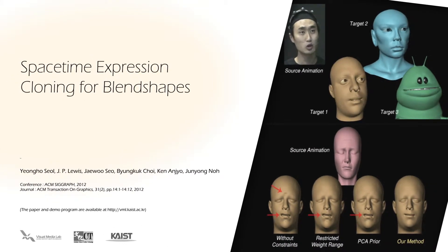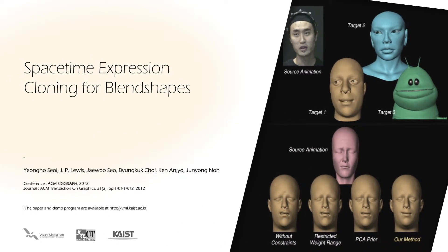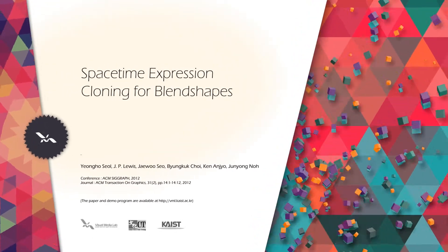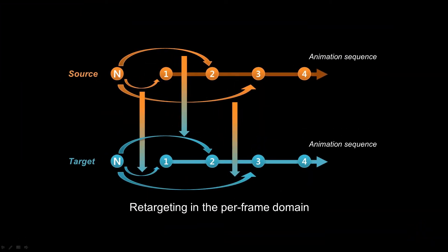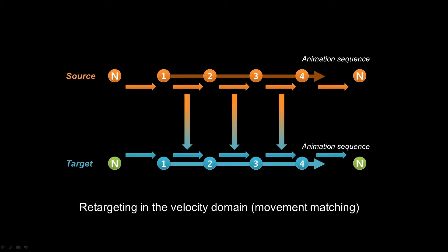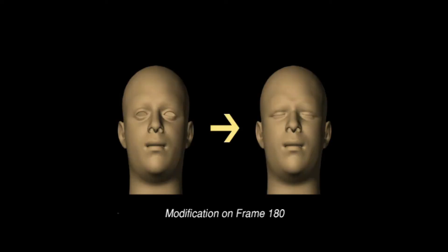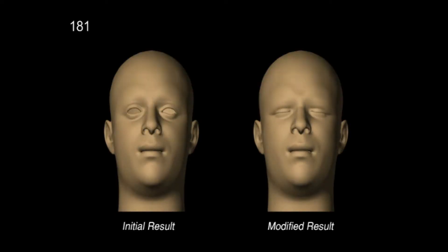This paper presents a novel space-time facial animation retargeting method for blend-shape face models. Whereas previous approaches conducted retargeting independently at every frame, our movement matching transfers the temporal derivative of source animation. The influence of user modification is smoothly propagated across neighboring frames while incorporating the underlying movement data. In the example with modification of eye movement at frame 180, the expression is changed and its influence is propagated across surrounding frames.